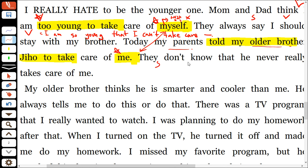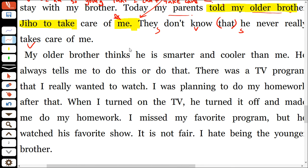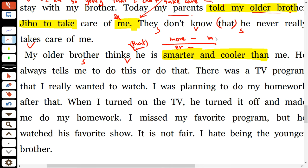주어·동사 사이에 that 생략이 돼 있어요. 비교급에서 조심하세요. more와 er을 같이 쓰면 안 돼요. more smarter처럼 쓰면 틀려요. beautiful처럼 긴 단어는 more만 써요. smarter처럼 짧은 단어는 er만 써요. more과 er은 같이 쓸 수 없어요.